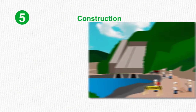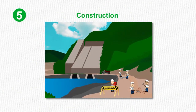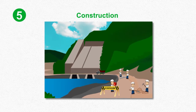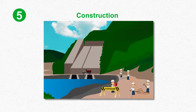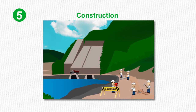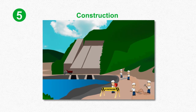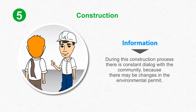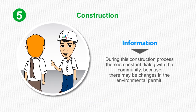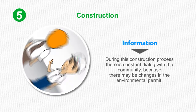Construction. Once the environmental permit is obtained, construction of the power plant begins, informing the community of the execution time, future implications, and the compulsory and voluntary actions that will be carried out to benefit the community and mitigate environmental impact. During this construction process, there is constant dialogue with the community because there may be changes in the environmental permit.